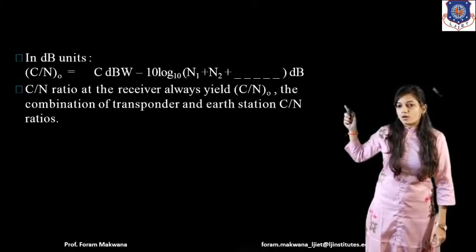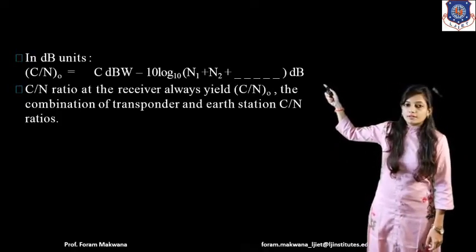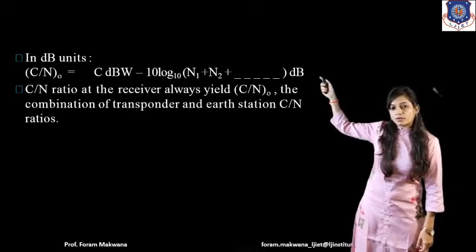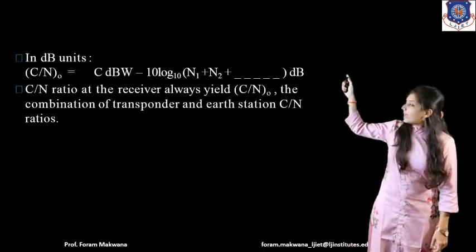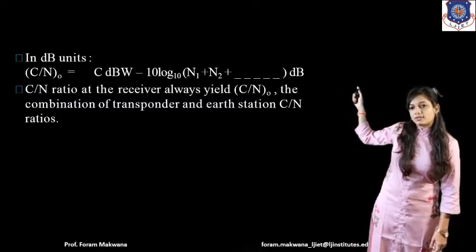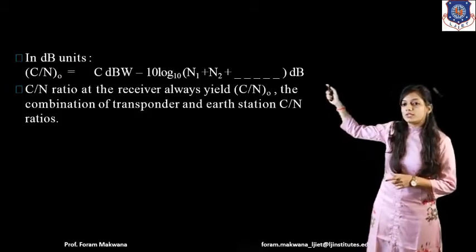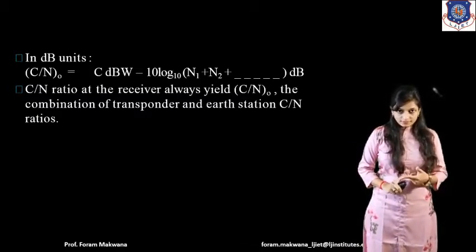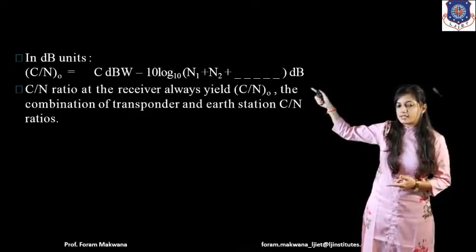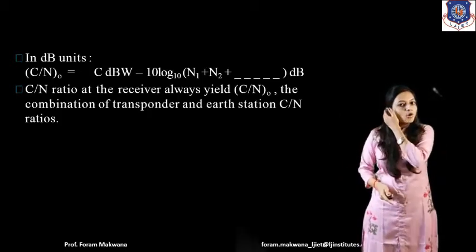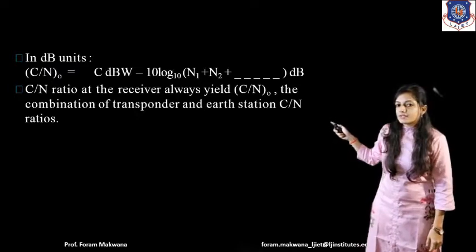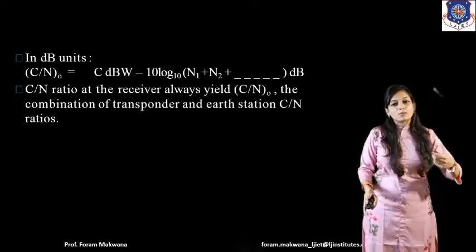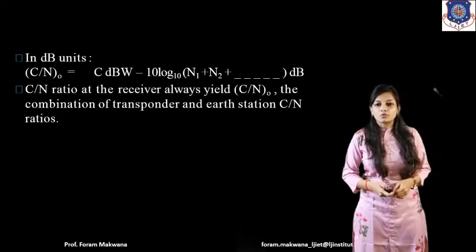If the values are in dB, the overall C/N is calculated as: C/N(O) equals the carrier power in dB minus 10·log of (N₁ + N₂ + N₃ + … + Nₙ), where these noise power quantities are in dB. Because noise power is in the denominator, we subtract that quantity when representing it in decibel form. At the receiving side this represents the overall carrier-to-noise, combining the transponder and earth station contributions.